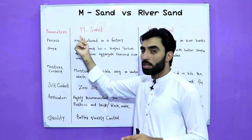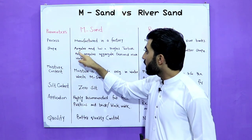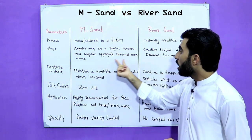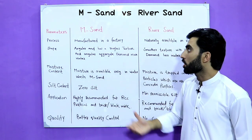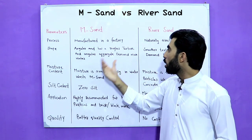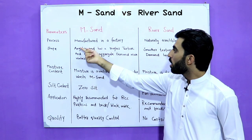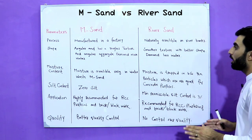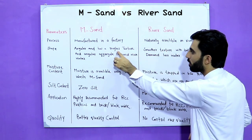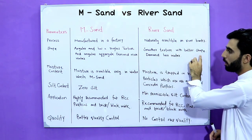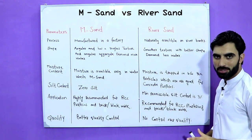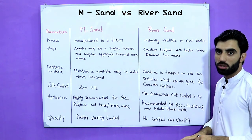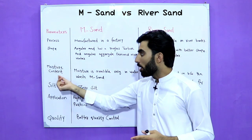The second parameter is shape. The shape of M-sand — manufactured sand — is angular and has a rougher texture. Angular aggregate demands more water, so if you want to use M-sand in building construction, it needs a greater amount of water. River sand, on the other hand, has a smoother texture and a better shape, and it demands less water compared to M-sand.